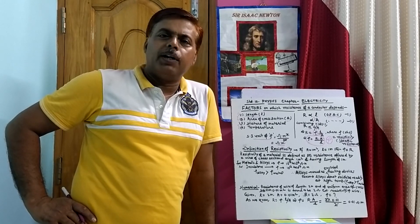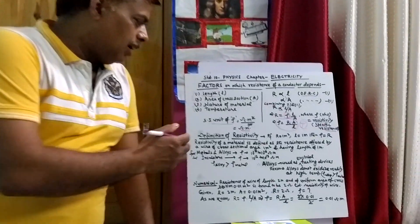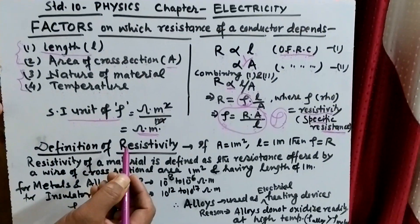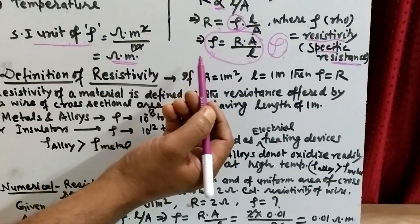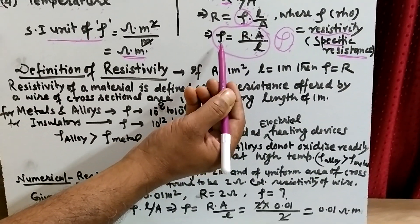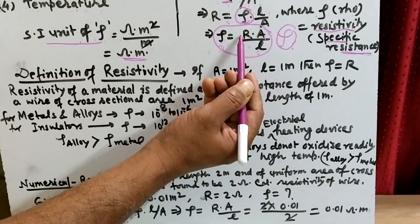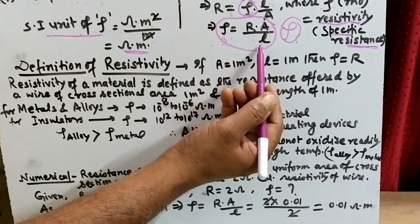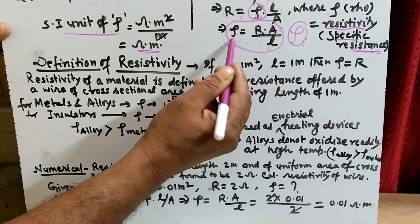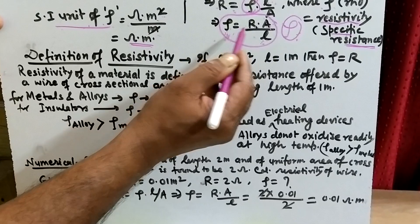Let us see how we can define resistivity by looking at the previous video in which we discussed the formula of resistivity. The formula of resistivity is: resistivity equals R multiplied by A divided by L. From this formula we can define resistivity.